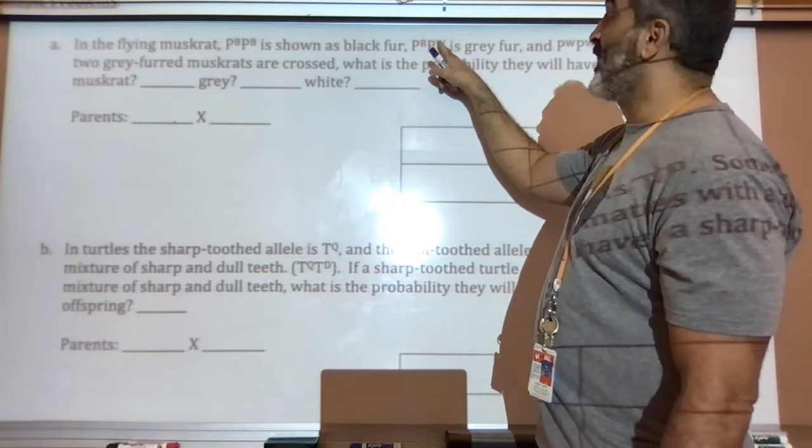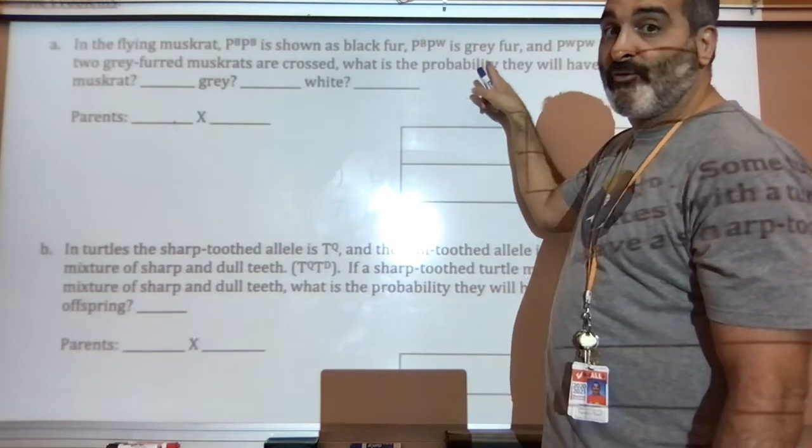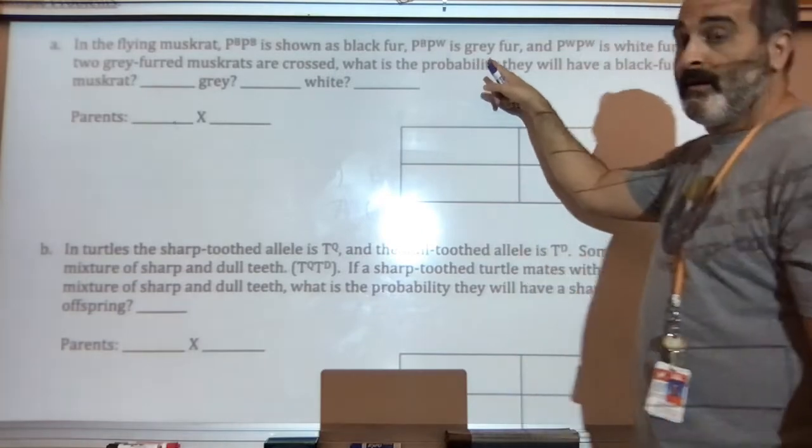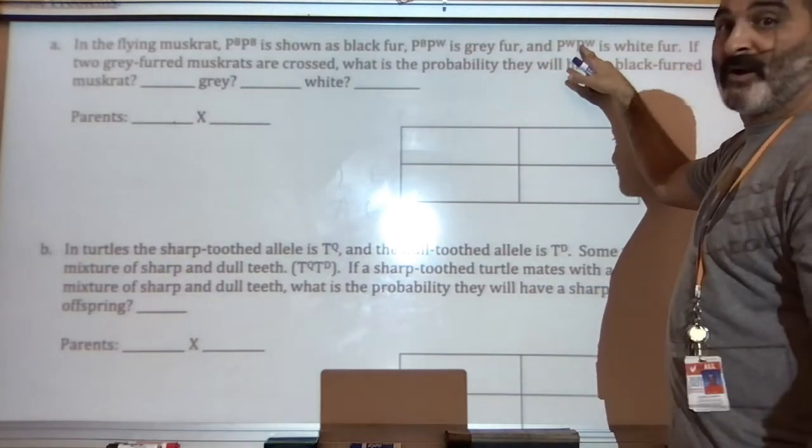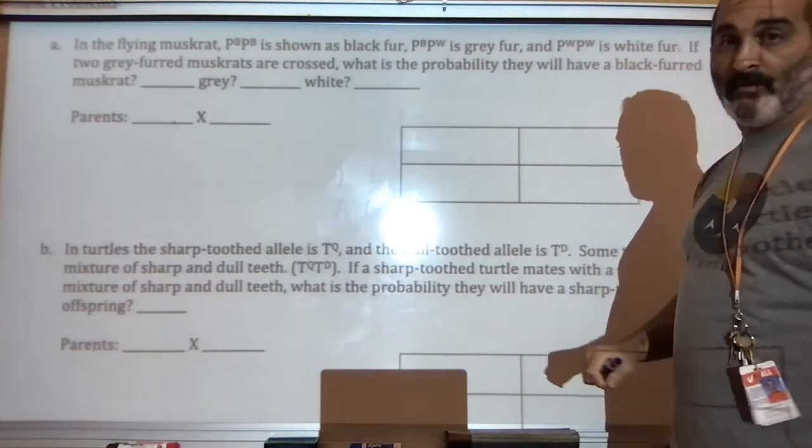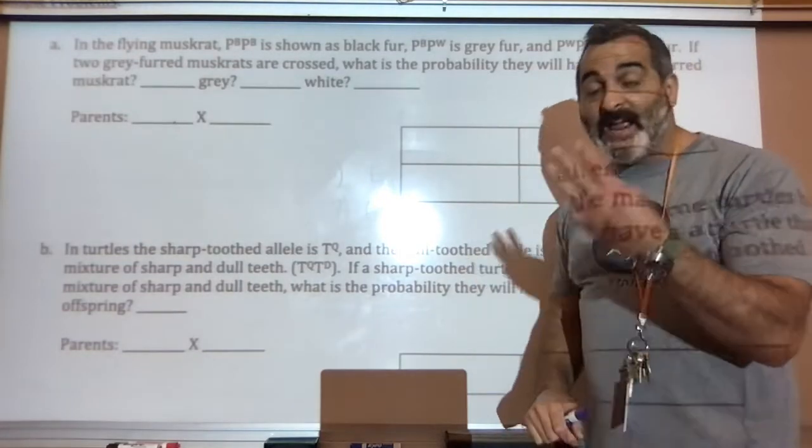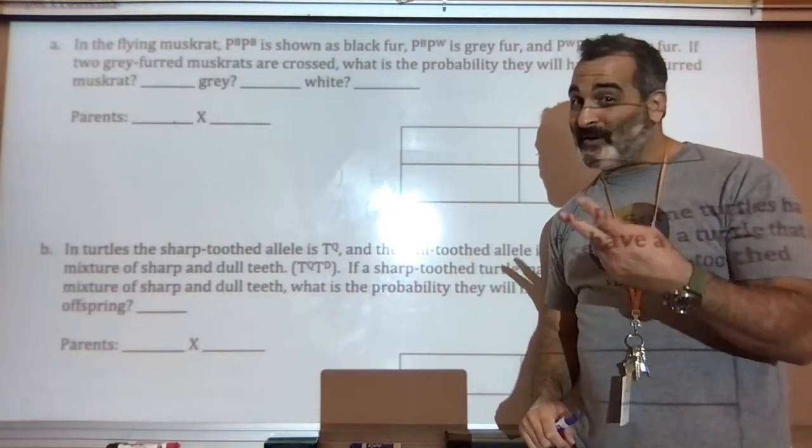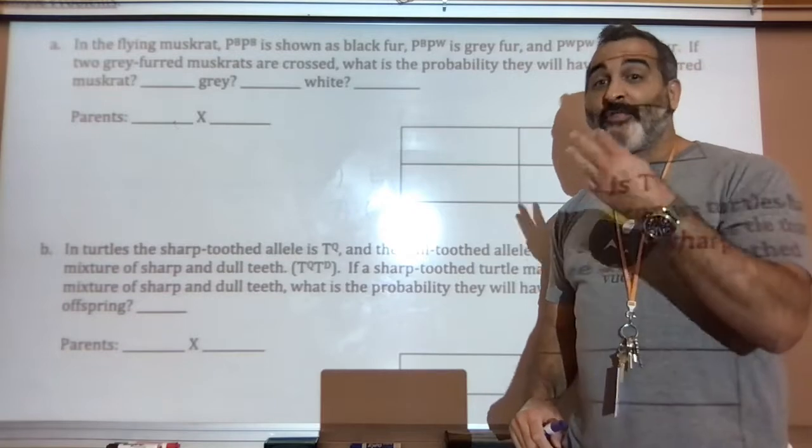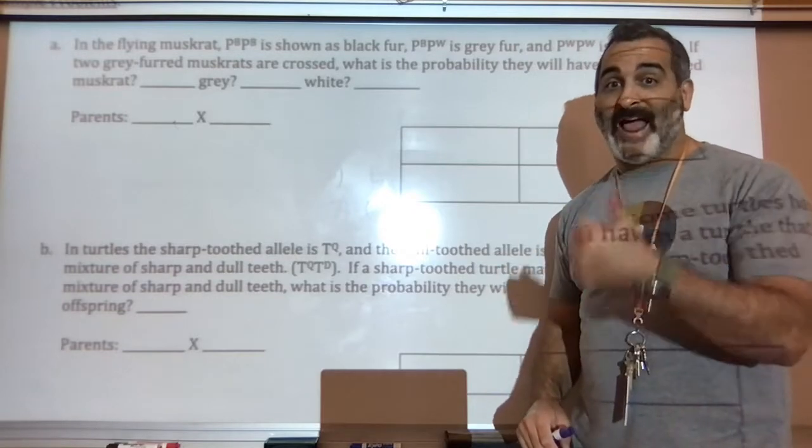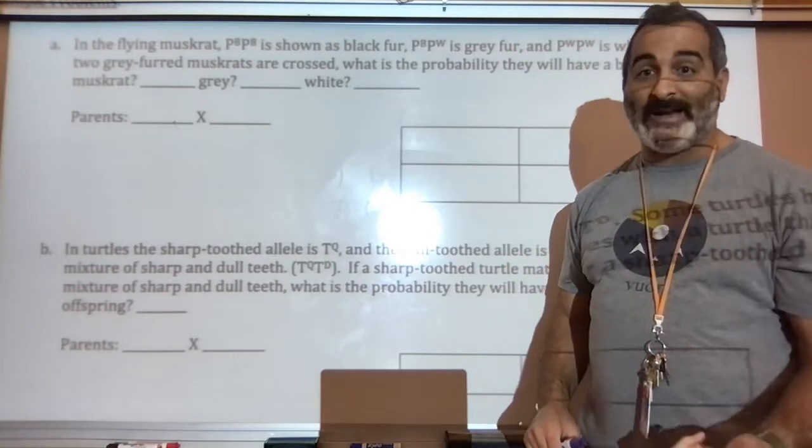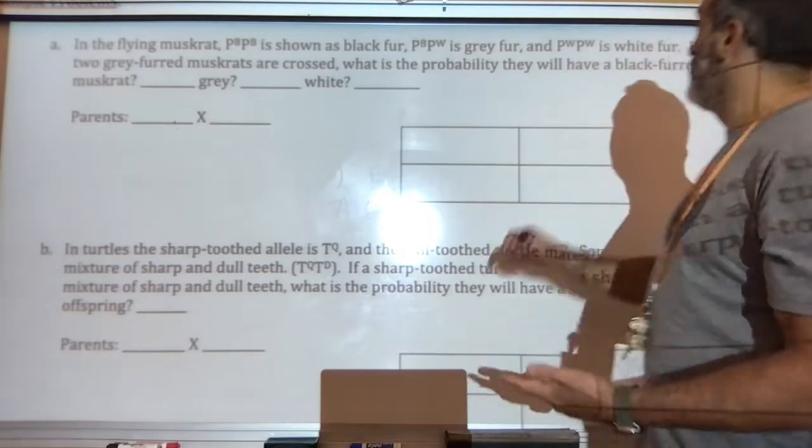Uppercase B, uppercase W is gray fur. Uppercase W, uppercase W, white fur. So we have three phenotypes, not two phenotypes like the first type of genetic cross, three possible phenotypes. We have black, gray, and white possibilities. Then we say, if two gray furred muskrats are crossed.